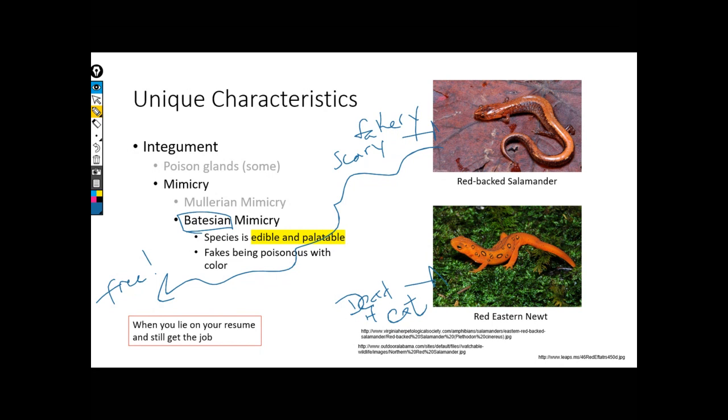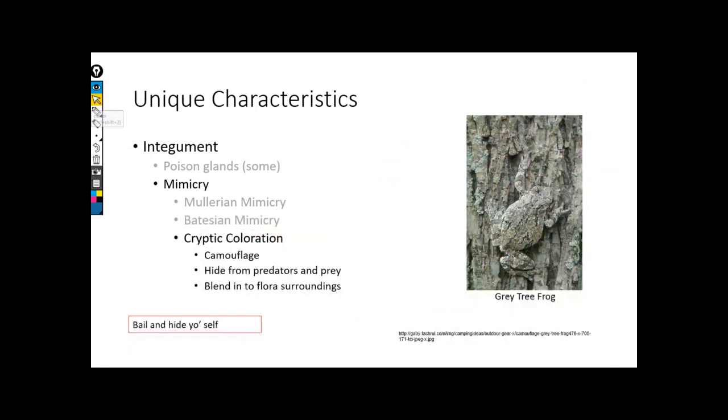Student: So the red eastern newt is Mullerian or is that the Batesian? Instructor: The red-back salamander here is the Batesian. The red eastern newt is Mullerian. The red eastern newt is one of our team members from last slide. The difference between Batesian and Mullerian, nice and clear?